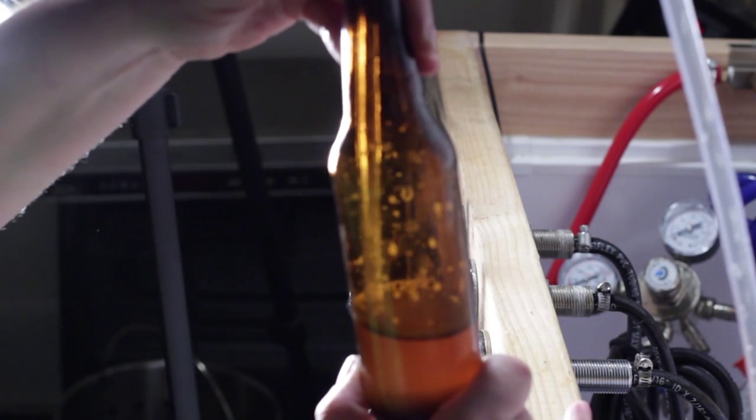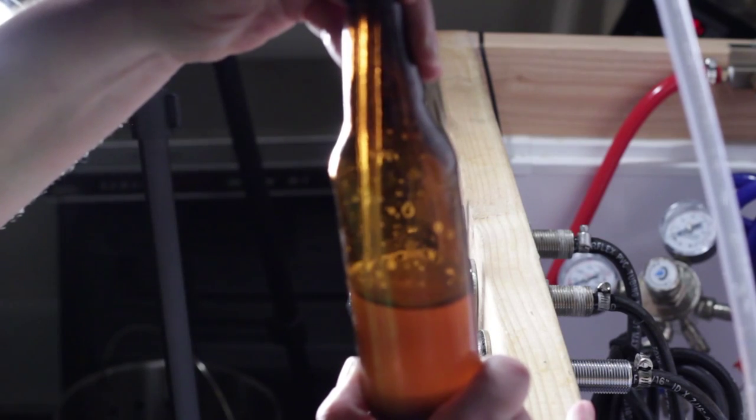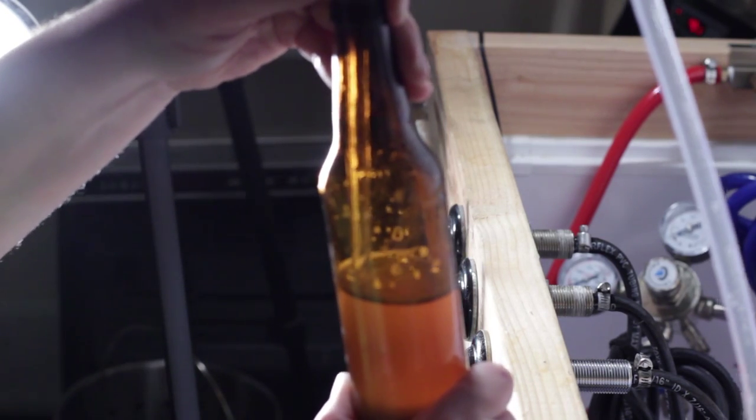As the beer fills the bottle, CO2 pressure will build up and stop the beer flow. When this happens, slowly vent the CO2 from the bottle by squeezing the bottle.